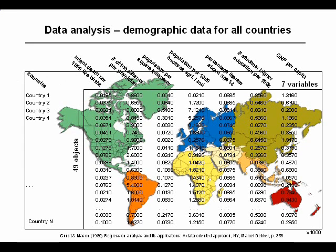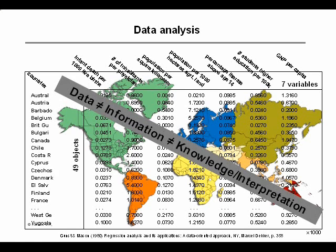Here's an example of what is actually a quite simple dataset. We have different countries — 49 altogether — and then we have seven demographic descriptors: the number of infant deaths per 1,000 births, number of inhabitants per physician, et cetera. So this is a fairly small dataset, but even that can be complicated to look into. Data in itself is not the same as information and understanding.